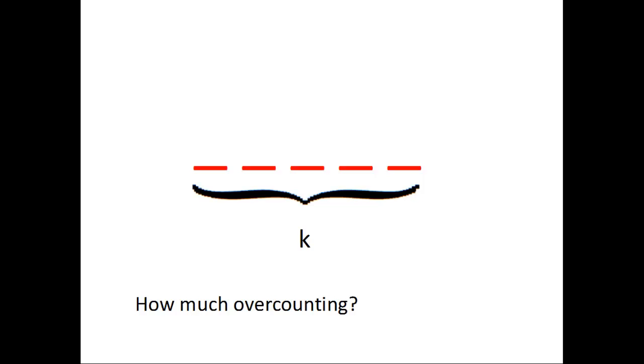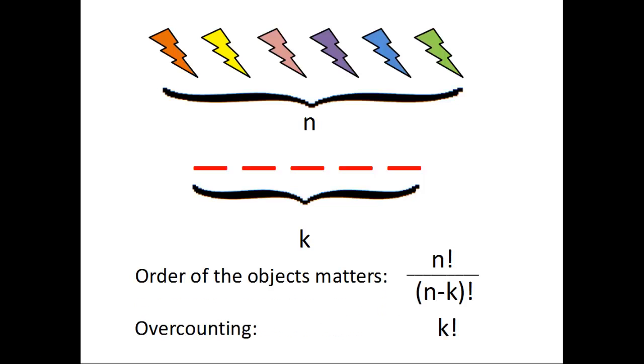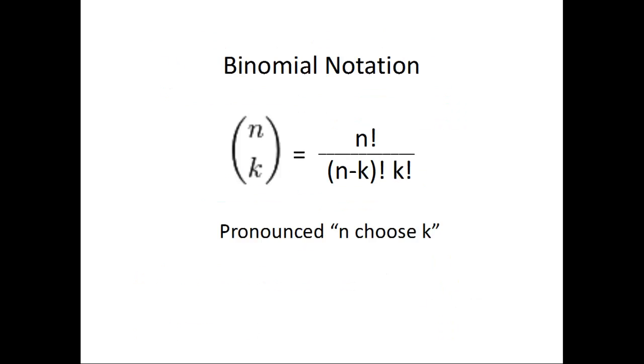Well, each possibility has K objects. So, the number of ways we can rearrange the K objects is K factorial. Therefore, we've over-counted each possibility by K factorial times. So, we take the overall number of possibilities and divide it by K factorial to get the actual count. Thus, we have N factorial divided by N minus K factorial, K factorial.